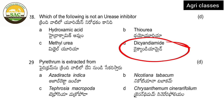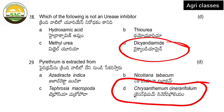Next: pyrethrum is extracted from — Azadirachta indica, Nicotiana tabacum, Tephrosia macropoda, or Chrysanthemum cinerariifolium? This is a botanical pesticide. In Azadirachta indica all parts are important; in Tephrosia, the leaves, stem, and roots. Chrysanthemum cinerariifolium is related to pyrethrum — pyrethrum is extracted from the flower petals of this plant.